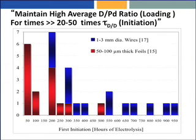The gentleman in the front asked about loading time — that seems like a hell of a long time, and it really is. The blue data represents bulk cathodes: 1 to 3 millimeter diameter palladium wires, which we did most of our work with. The earliest we saw was around 200 hours; in one case we ran an experiment for 950 hours — a good fraction of a month — before the first evidence of excess heat. This initiation process, whatever it is, takes a whole lot of time in bulk wire cathodes.